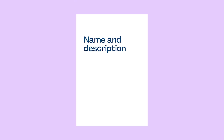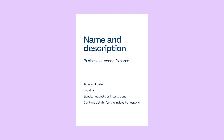Here is information we typically see on an invitation: a name and description of the event, the business or sender's name, a time and date, the location, any special requests or instructions, and contact details for the invitee to respond — in other words, a call to action. It's a lot to fit.